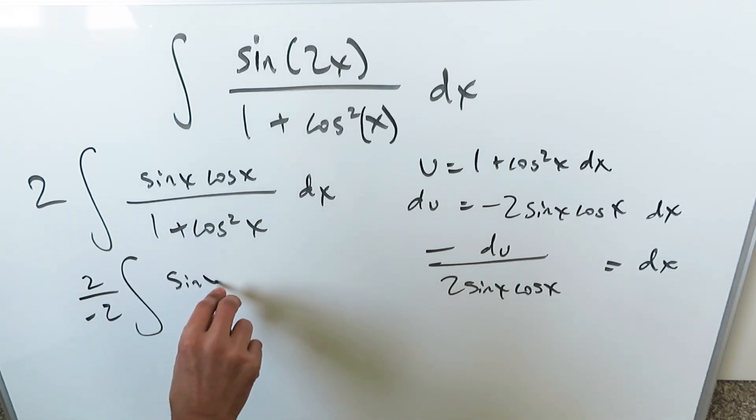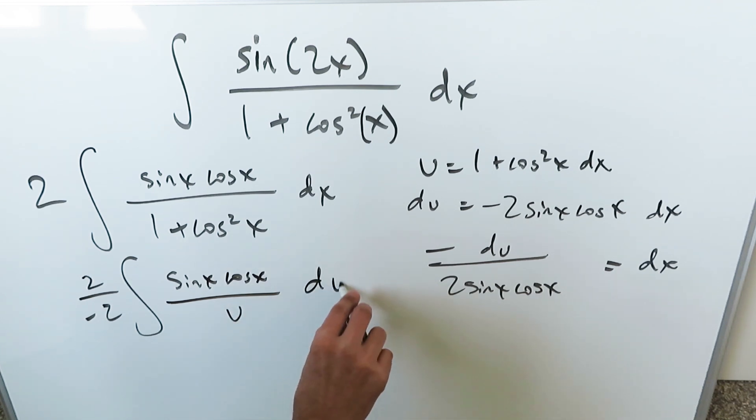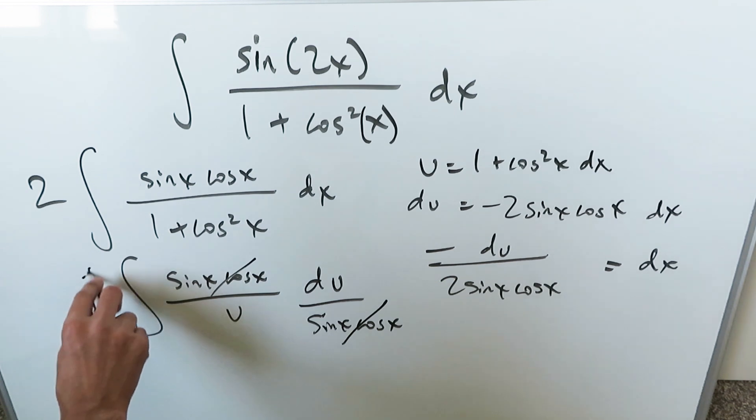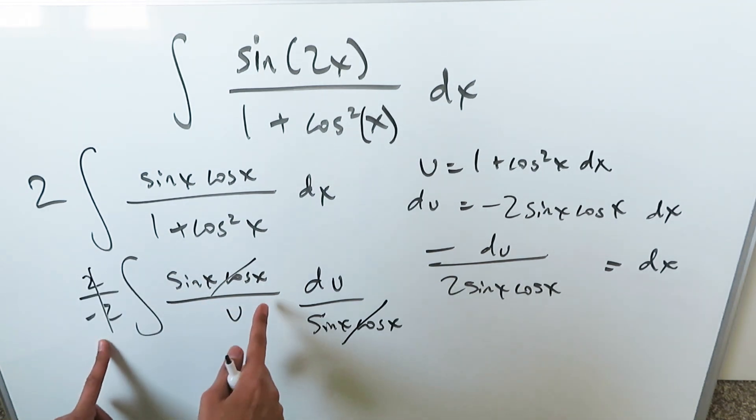You'll have a 2 divided by a minus 2. I'll have a sine x cosine x divided by u and then here I have a du divided by sine x cosine x. This 2 has been brought out over here with a minus. This cancels out with this. The only thing which remains is a minus 1 over u du integral.